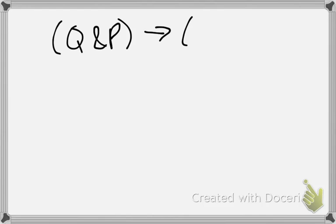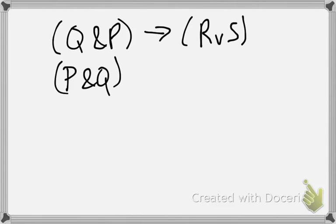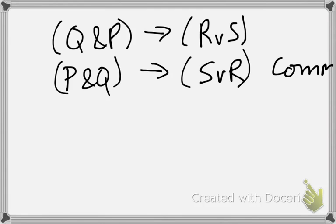But as long as it seems pretty straightforward, like if I had the formula Q and P arrow R or S, then I could do commutativity on both halves. So I could write P and Q arrow S or R, and that's not confusing at all. That's pretty easy to follow. But if it starts to get too many conversions, it's probably better to take it in a number of steps.